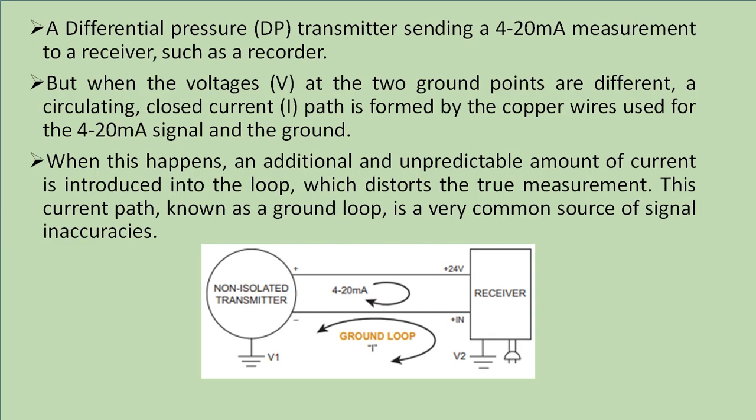But when the voltages of the transmitter and receiver are at different grounds, a circulating closed current path is formed by the copper wires used for the 4-20 milliampere signal and the ground, as shown in the figure. When this happens, an additional and unpredictable amount of current is introduced into the loop. This current will distort the true measurement of the 4-20 milliampere signal.